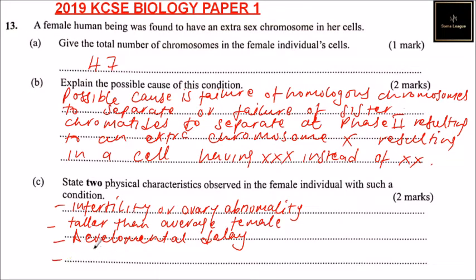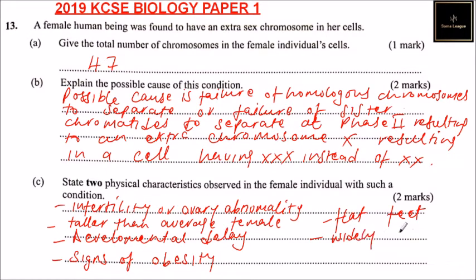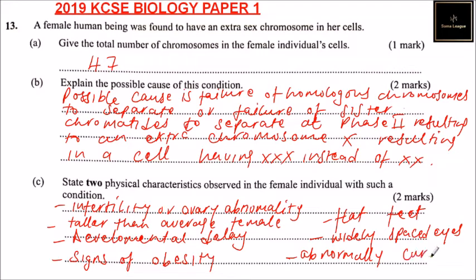Another one is signs of obesity. Another one is flat feet. Another one that can be observed is widely spaced eyes. Another one is an abnormally curved pinky. So those are the physical characteristics of a female individual with such a condition.